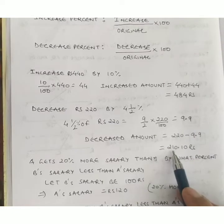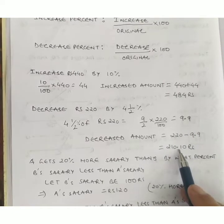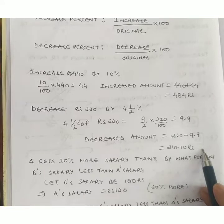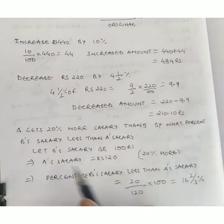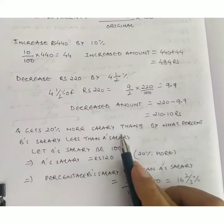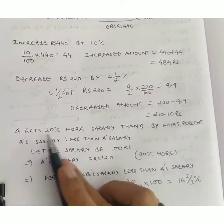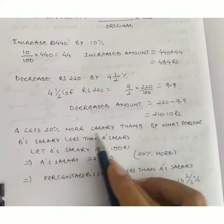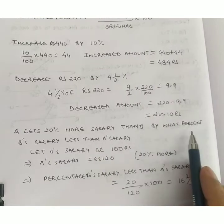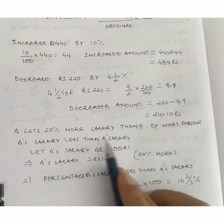This is a simple question frequently asked in examinations: A gets 20% more salary than B. By what percent is B's salary less than A's salary?